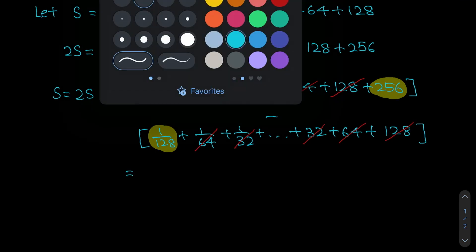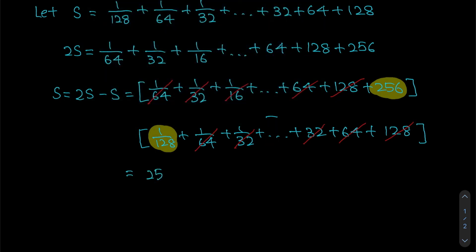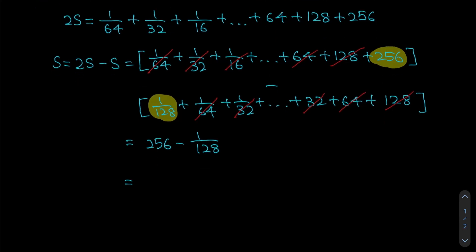So all we have to do now is to work out what 256 minus 1 over 128 is. And we can simply work that out now because there are only two terms.